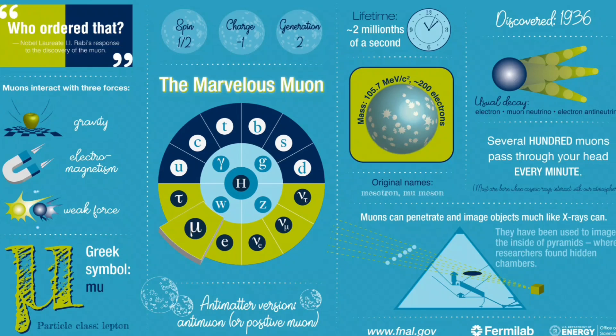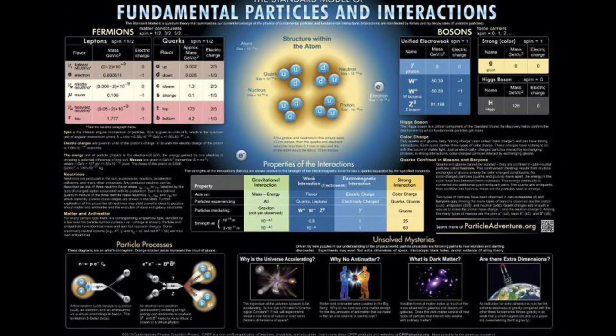The muon anomaly, often referred to as the muon g-2 anomaly, is a fascinating subject in particle physics that has puzzled scientists for decades. It revolves around the magnetic moment of the muon, a fundamental particle similar to the electron but with a greater mass.